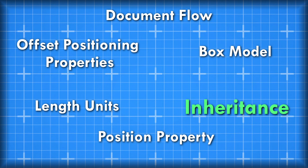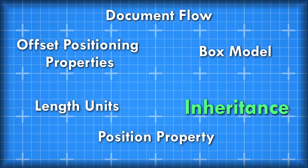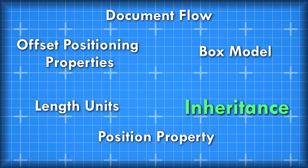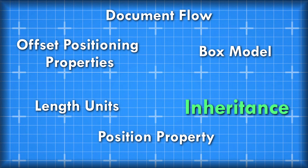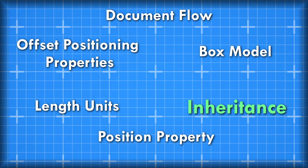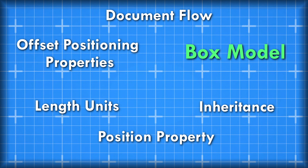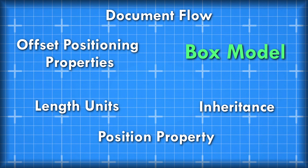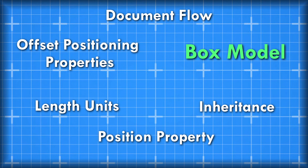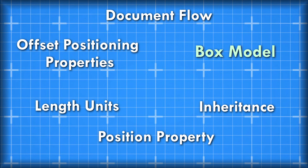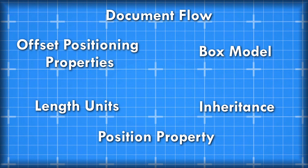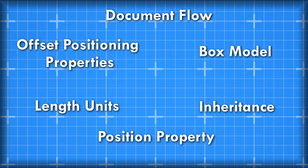You also need to understand the concept of inheritance, due to which elements are positioned relative to their parent element. We overviewed this concept in episode 5 of the course so I won't be going into too much detail in this one. Last but not least, you also need to understand the CSS box model, which we covered in great detail in the last episode. All of these concepts interact with each other, which is why you need to master each one in order to be able to position elements in your game effectively.